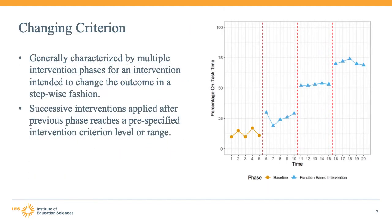The next single-case design eligible for review by the WWC is the changing criterion design. This design is characterized by multiple intervention phases for an intervention intended to change the outcome in a stepwise fashion. Successive intervention phases are applied after the outcome reaches some pre-specified criterion value or criterion range. Such pre-specified criteria might, for instance, be that the percentage of time on task exceeds 20% for five sessions, then exceeds 50%, and finally exceeds 60%. Some designs will also include embedded reversals to baseline in addition to the steadily incrementing criterion.